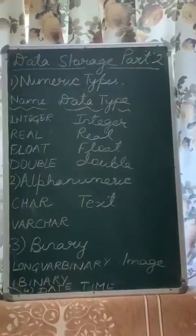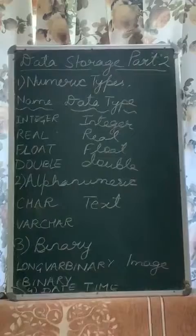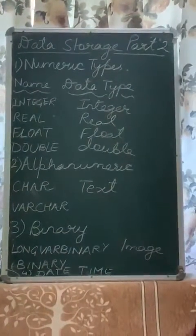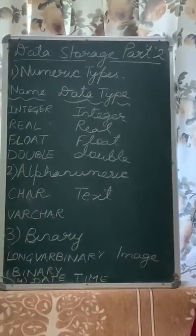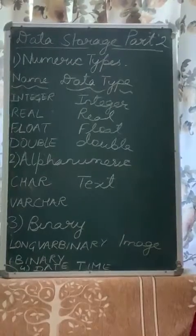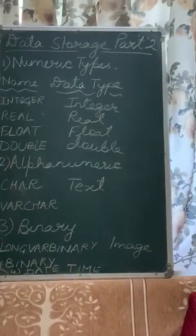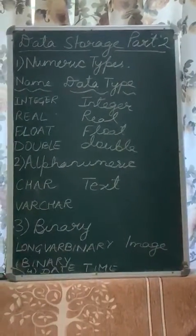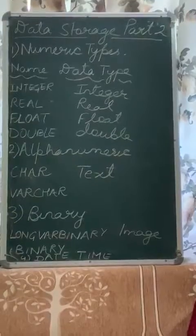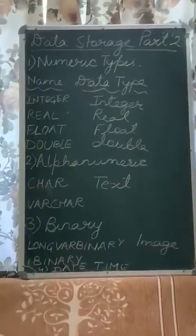Binary data type is used for storing photos, music files, audio, or video in your database. The next one is the date/time data type, used for describing date and time values — for example, date of birth, date of admission, date of product sale. We have three types: DATE stores month, day, and year (e.g., 1.1.2000); TIME stores hour, minute, and second; and TIMESTAMP, spelled T-I-M-E-S-T-A-M-P, stores both date and time information.